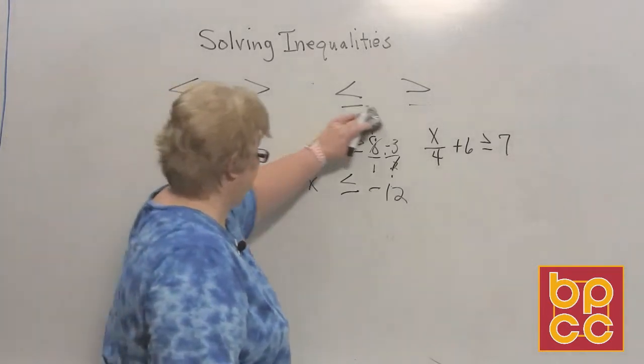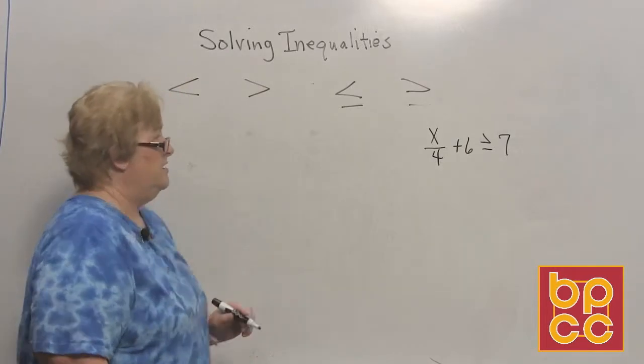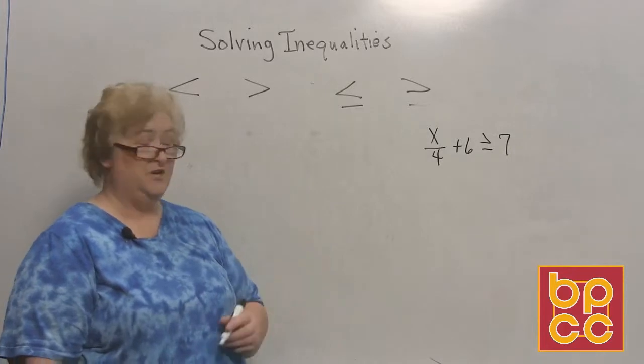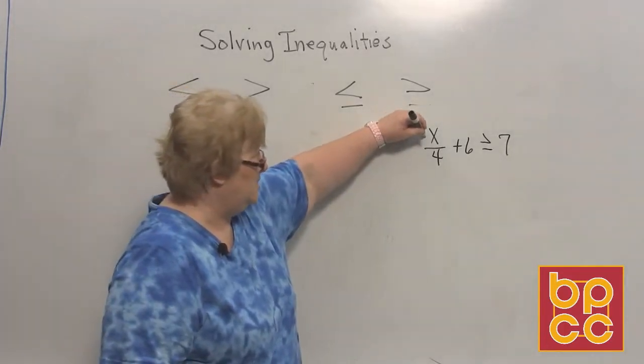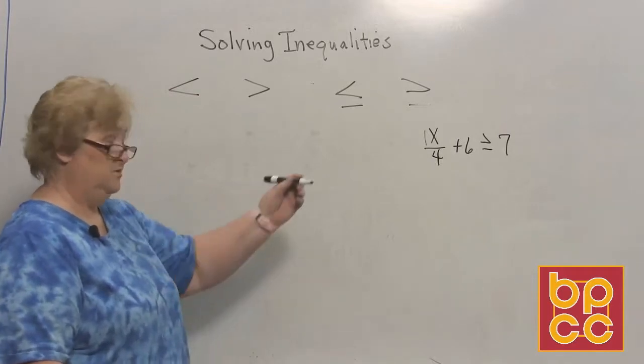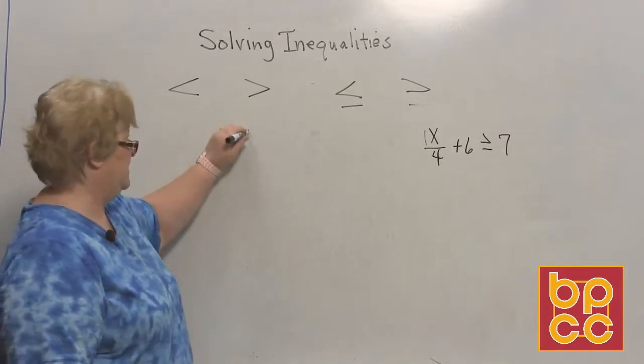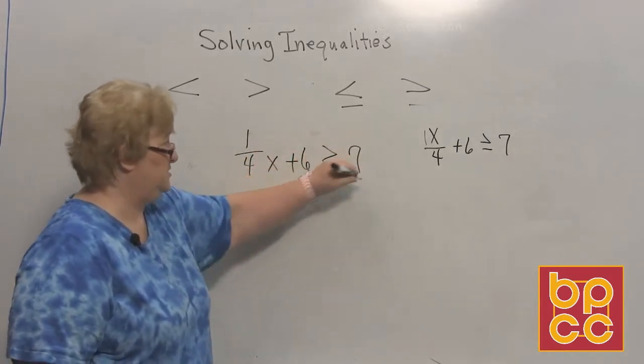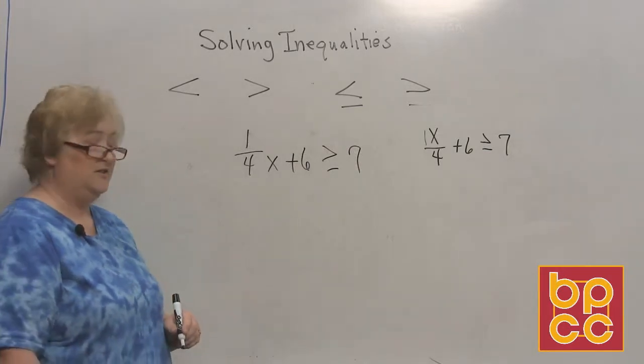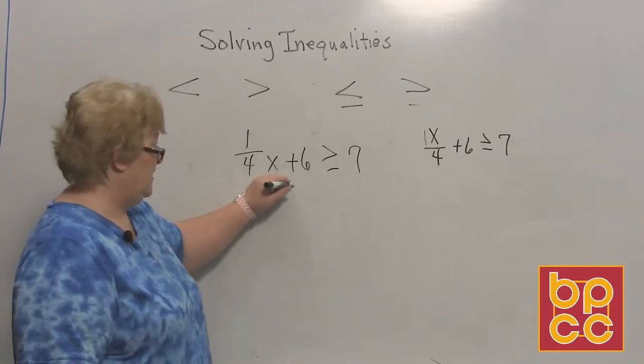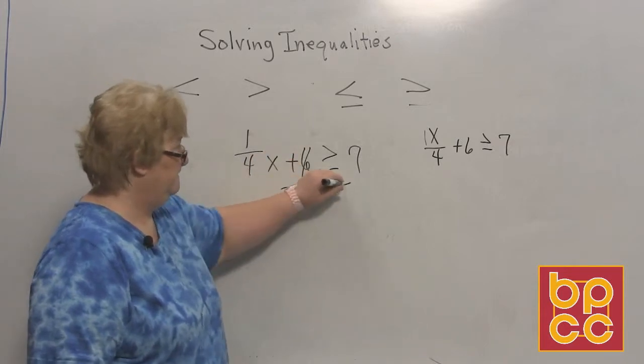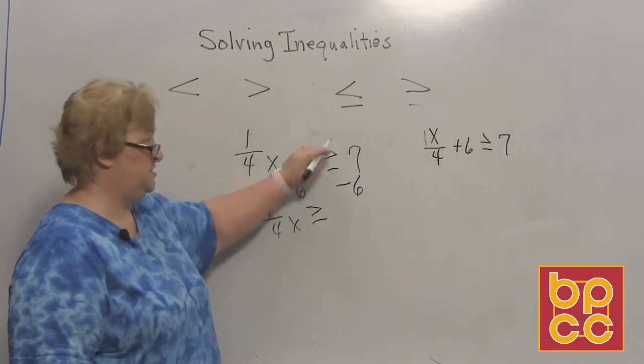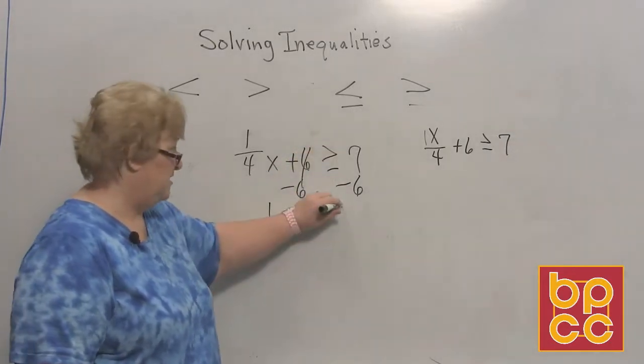All right, let's look at this last one. On this one, it looks a little strange. A lot of times, you'll see it written this way, but keep in mind, there really is a 1 right there. So I'm going to write it again for you, should you happen to see it this way. It's really nothing but 1 fourth x plus 6 is greater than or equal to 7. And now, we can move our 6 like we normally do. Take away 6, take away 6. I have a positive 1 fourth x is greater than or equal to 7 and a negative 6 is a positive 1.